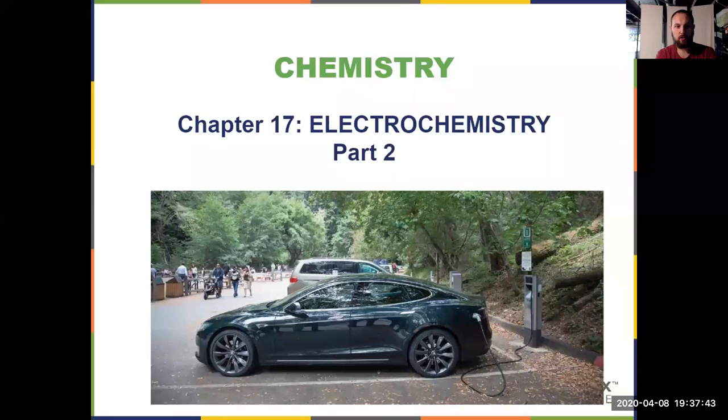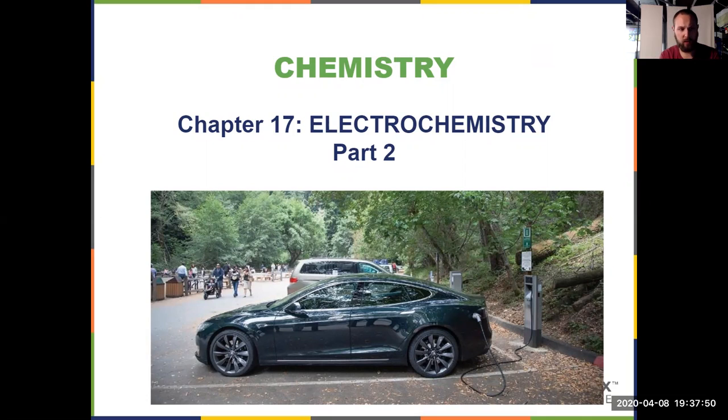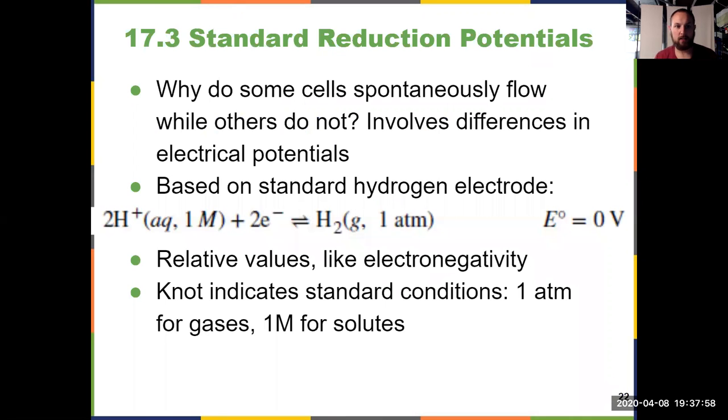For our second video in chapter 17 on electrochemistry, we're going to continue discussing reduction potentials which were introduced in the first video. This video contains most of the key ideas from chapter 17, specifically the calculations involved. The whole goal in thinking about these reduction potentials is to answer the question: why do some cells spontaneously flow, meaning electricity can be harnessed, while others don't? That question is answered by looking at electrical potentials and standard reduction potentials.